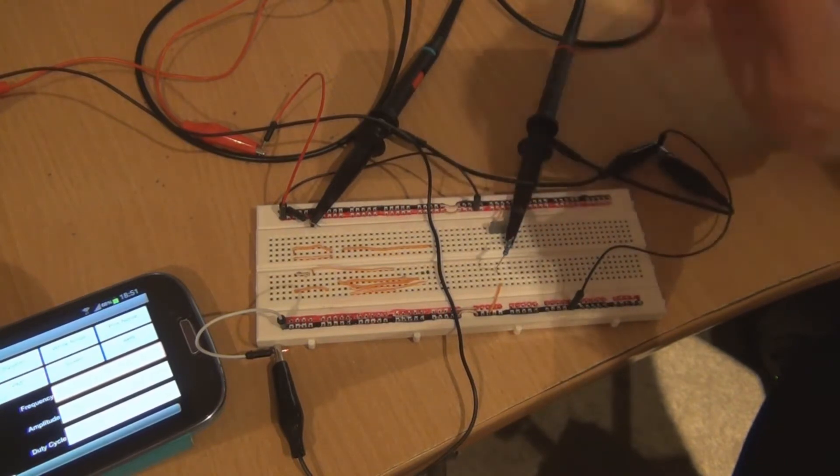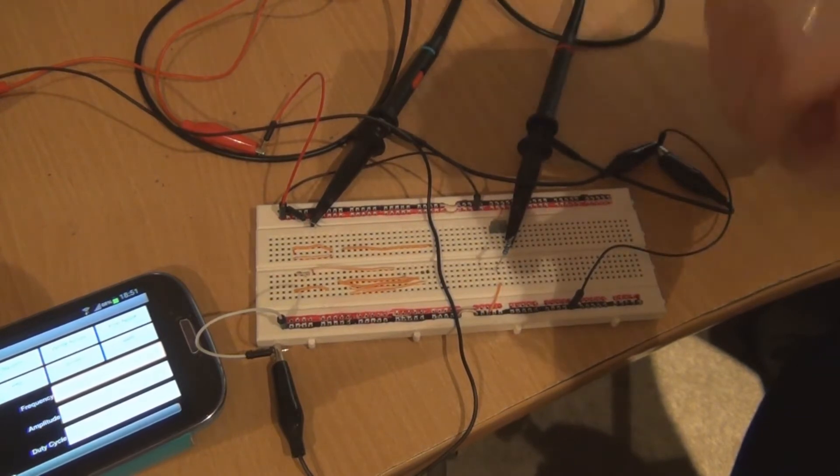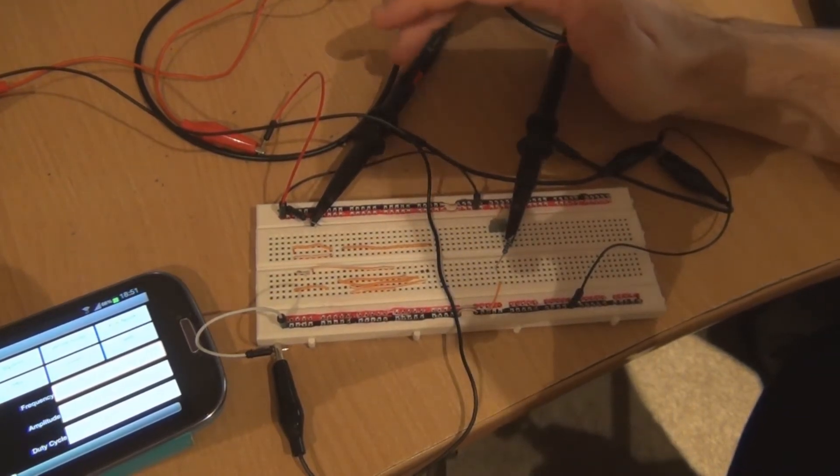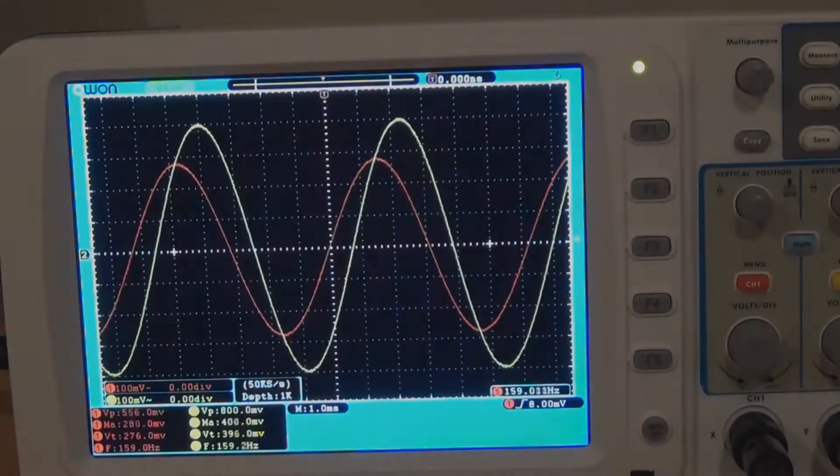Whereas the yellow signal is the input signal and that's just connected to the input. So I've got a 159 Hz signal on the input. That's the yellow signal that you're seeing there and the red signal is the filtered signal and as you can see it's smaller than the original signal.